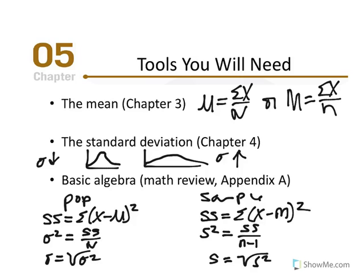By definition, standard deviation is the average difference between scores in a distribution and the mean of the distribution, and it reveals the consistency or inconsistency of scores. You should also refresh basic algebra skills — if need be, review the math review in Appendix A. We will be using equations and solving for different variables, needing to manipulate values and equations to isolate and solve for different unknowns.